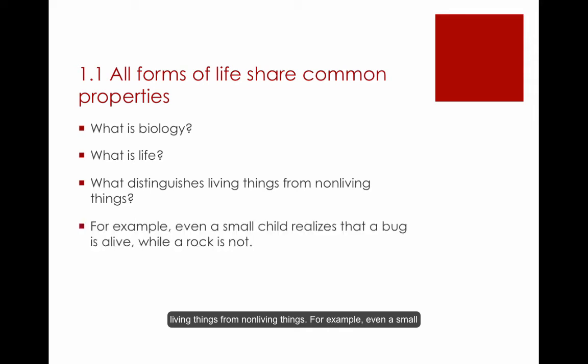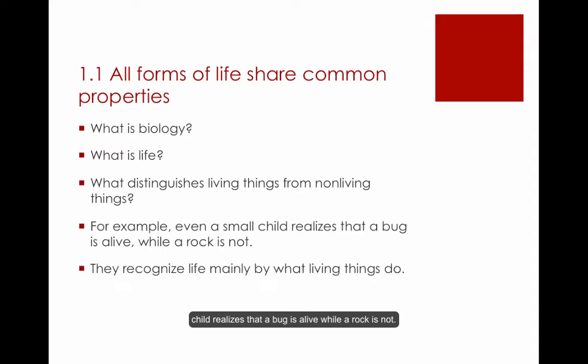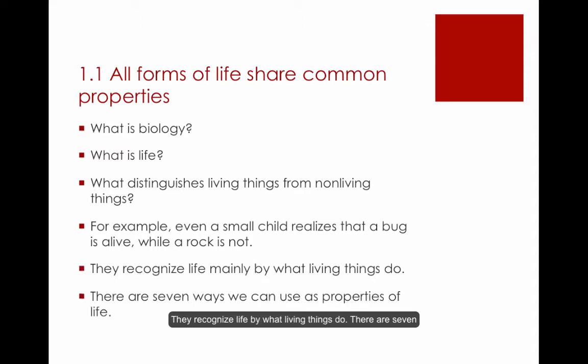For example, even a small child realizes that a bug is alive while a rock is not. They recognize life mainly by what living things do. There are seven ways we can use as properties of life.